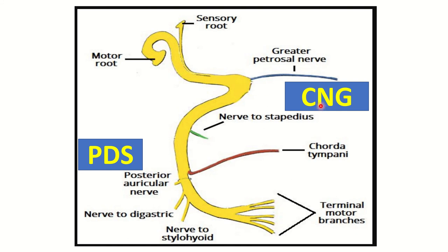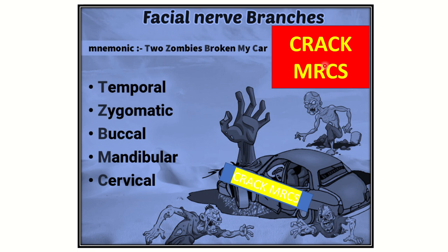In summary: three branches in the facial canal, three branches at the stylomastoid foramen, and five terminal branches — giving eleven total branches of the facial nerve that we must remember to answer questions regarding the facial nerve. The mnemonic 'Two Zombies Broken My Car' makes it easy to remember all five terminal branches.